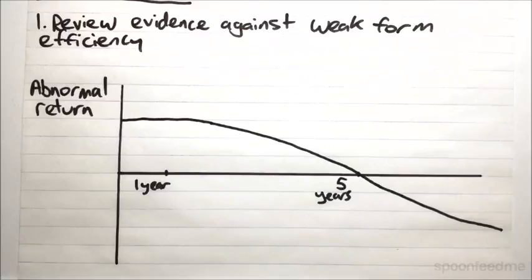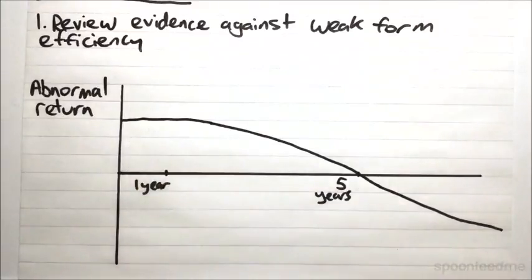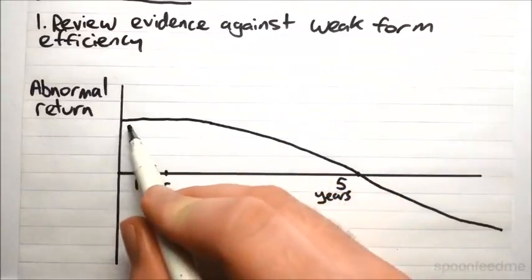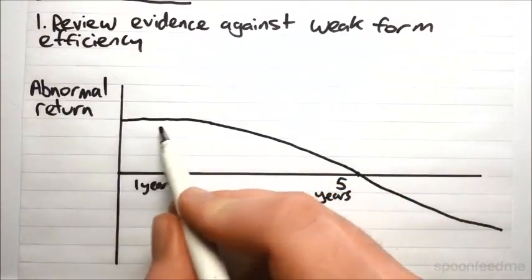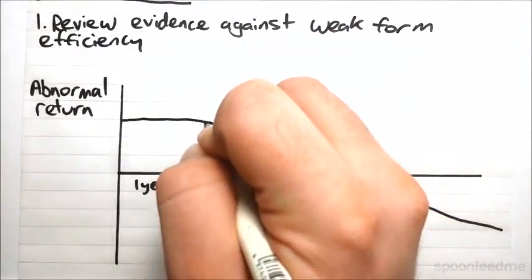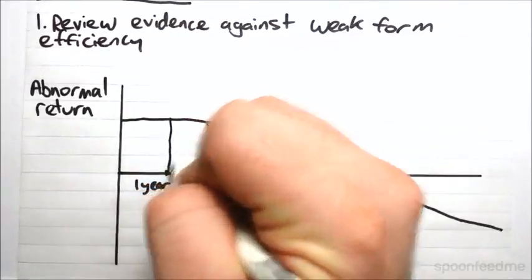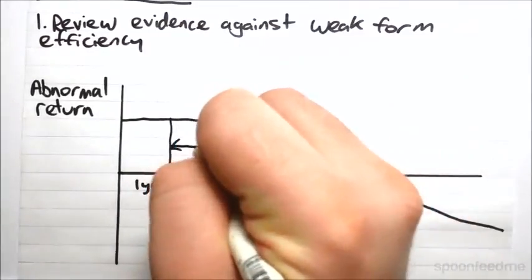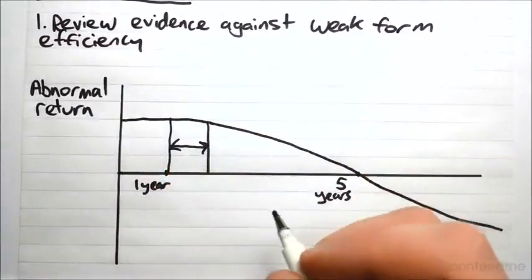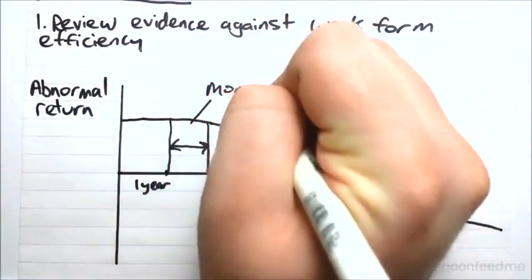But what we actually see typically is something a little more like the following — we actually see this sort of trend in the abnormal returns on share prices. So if a share performs well for one year, then in the following three to six months we notice that it actually continues to perform well. And this is what we call Momentum, or the Momentum Effect.